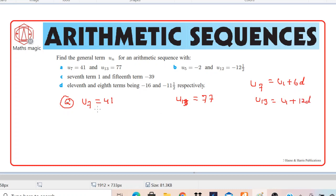Okay, so can we replace over here U7 with U1 plus 6D and then equals 41, and U13 as U1 plus 12D equals 77. You can see we got two sets of equations and we can solve these equations simultaneously. So let's write it: U1 plus 12D equals 77. We have equation 1 and equation 2.